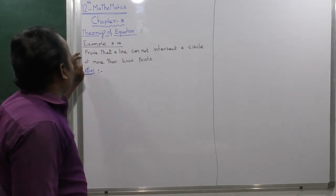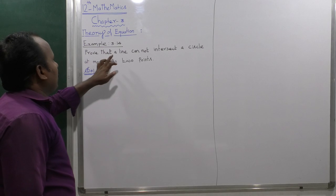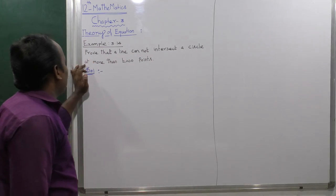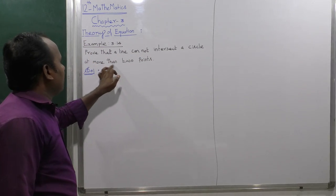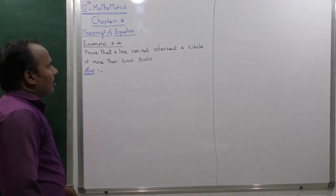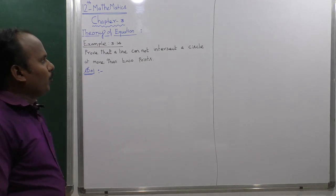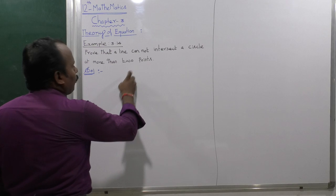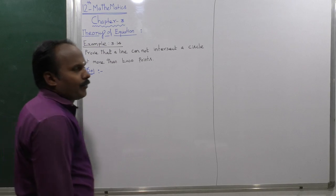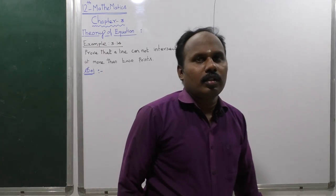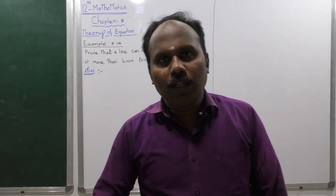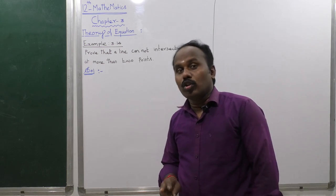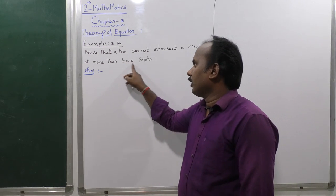Example 3.14: Prove that a line cannot intersect a circle at more than two points. More than two points means we suppose it meets at one point or two points, but not more than two points — that is the important point.